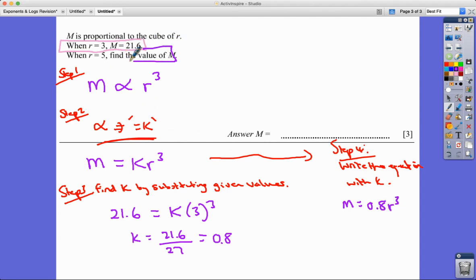So step five, answer the question. So now I know I've got my equation. Find the value of M when R equals five. R equals five.